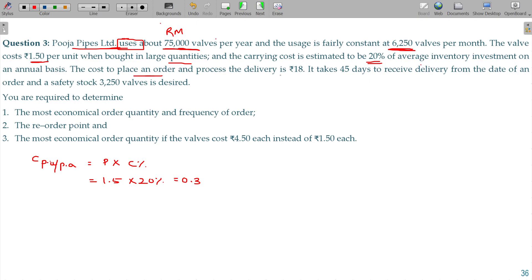The cost to place an order and process the delivery is 18 - this is ordering cost. It takes 45 days to receive the delivery from the date of an order and safety stock of 3,250 valves is desired. You are required to find out the most economical ordering quantity.